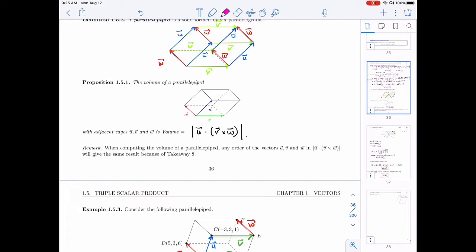It says that the volume of a parallelepiped with adjacent edges u, v, and w is the volume is equal to the absolute value of u dot v cross w, so the triple scalar product of u, v, and w.